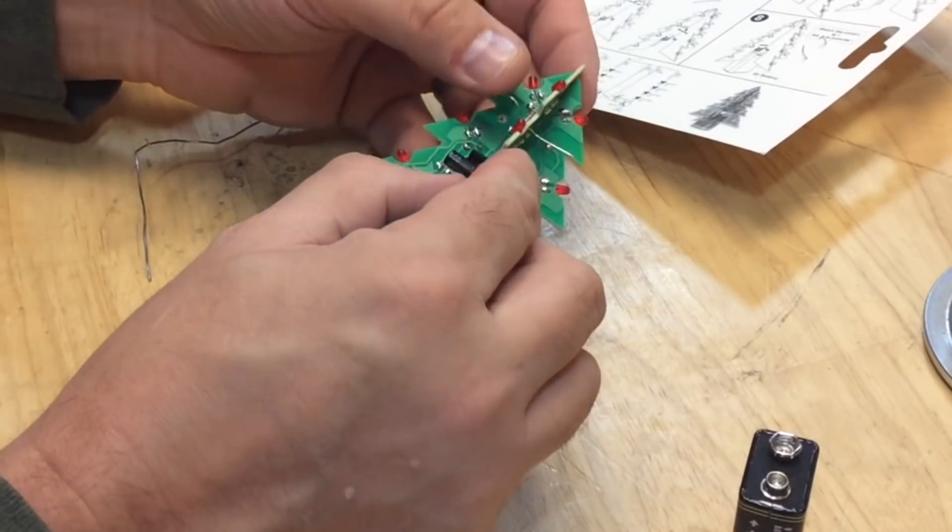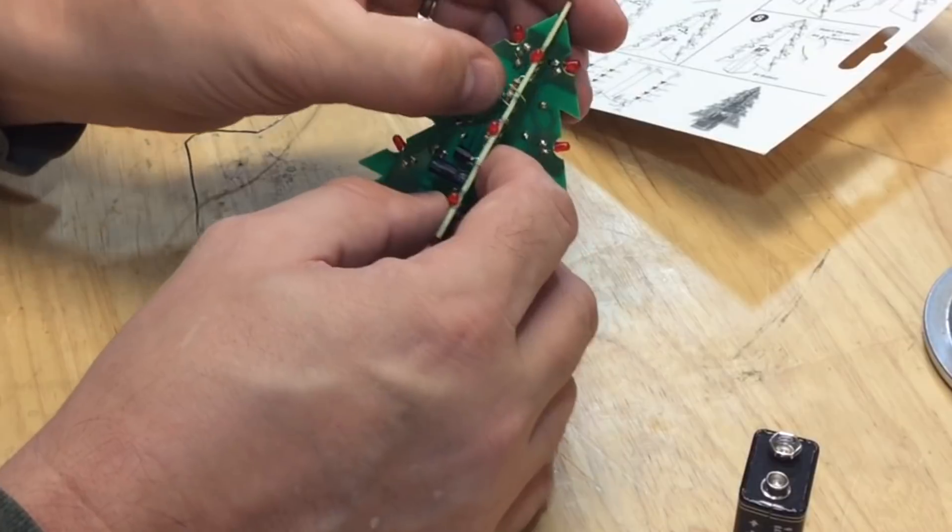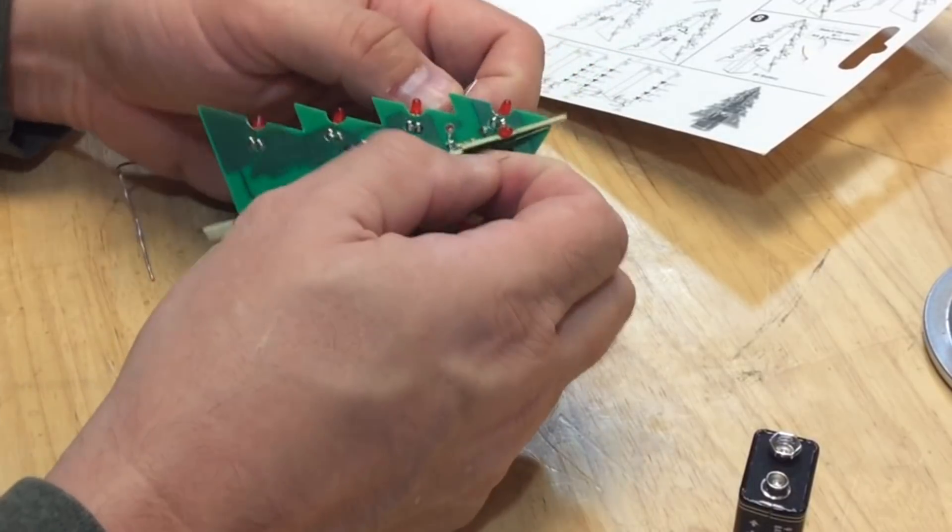Then I pulled both sides to make it flat and straight, because this is what holds the boards together once these are soldered. So I wanted them tight.